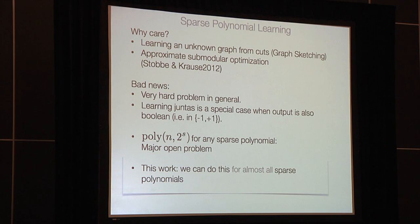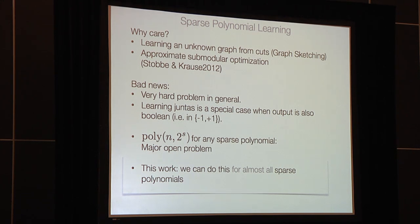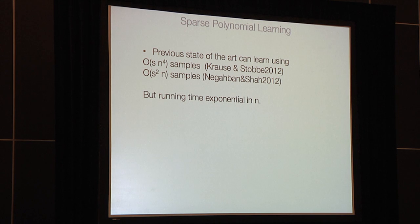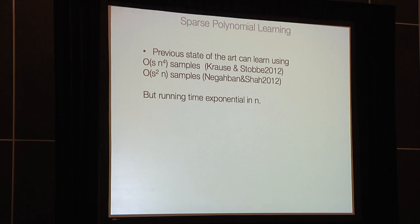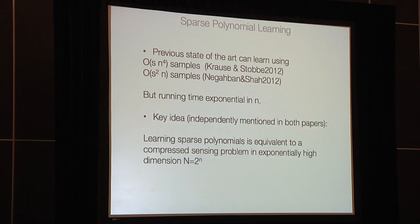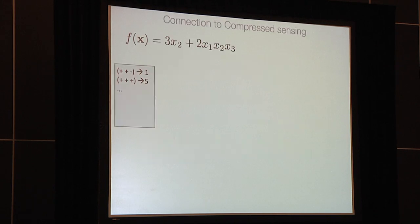In this paper, we don't achieve that. What we actually achieve is that we can learn almost all sparse polynomials in polynomial time — that's the main high-level result. None of the sparse polynomials we learn are boolean-valued; they will be real-valued functions. The previous state-of-the-art can learn sparse polynomials using a polynomial number of samples in s and n — papers by Krause-Stobbe and independently by Nagaban and Shah — but the problem is both are exponential time.